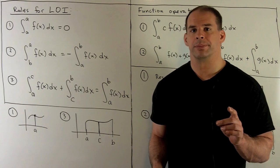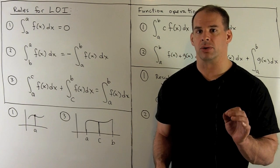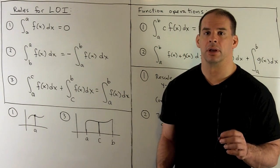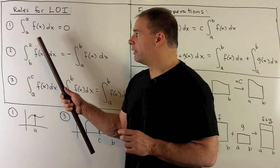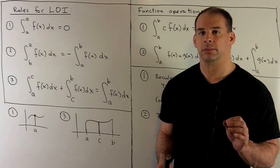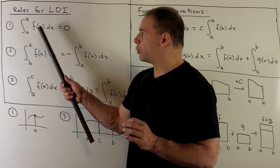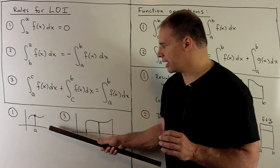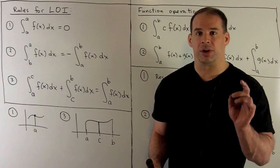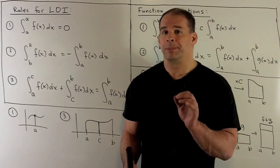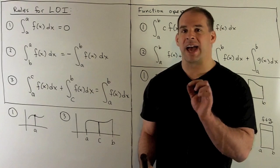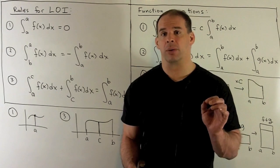Before we look at more examples, let's list some general rules for definite integrals. The first set deals with the limits of integration. First rule: the definite integral from a to a of f(x) dx equals zero. We don't have a proper interval — just over the point a — so our picture is just a line segment, and the area there is zero. Another way to think of it: if you run it through the limit process with rectangles, Δx is always equal to zero since a minus a is zero.